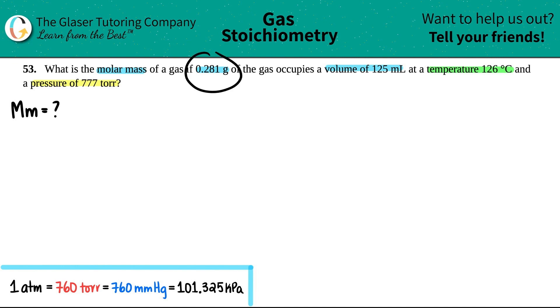Now, they gave us the mass of the gas, right? So I do have a mass value, which is 0.281 grams, and they gave me a volume. So volume equals 125 mils and the temperature, so they gave us a temperature of 126 degrees Celsius and the pressure is 777 torr.